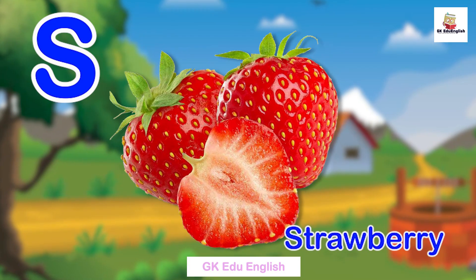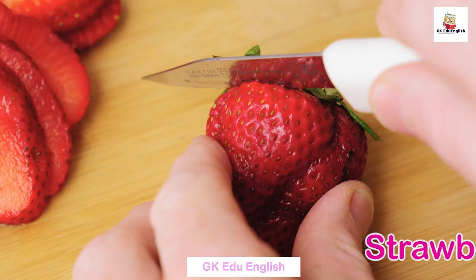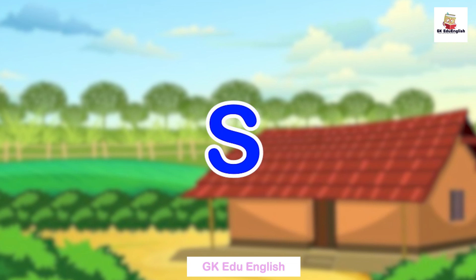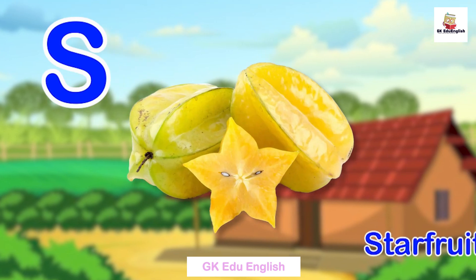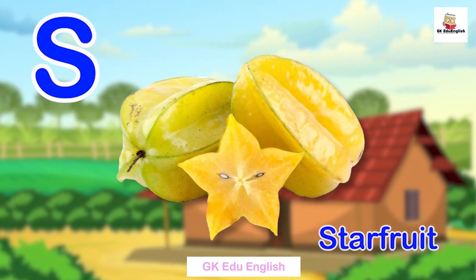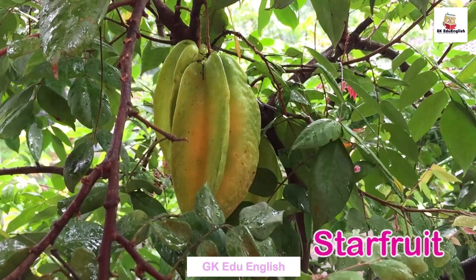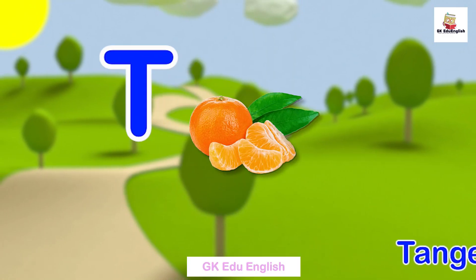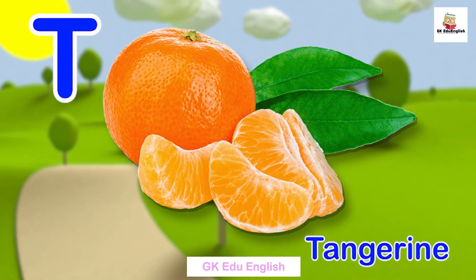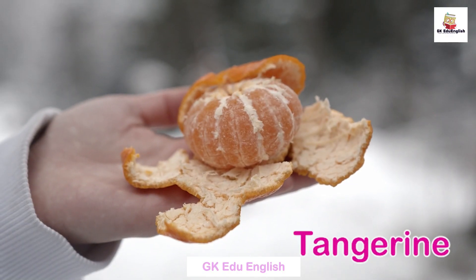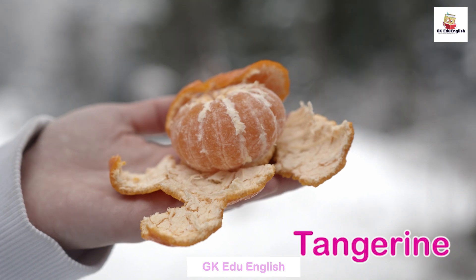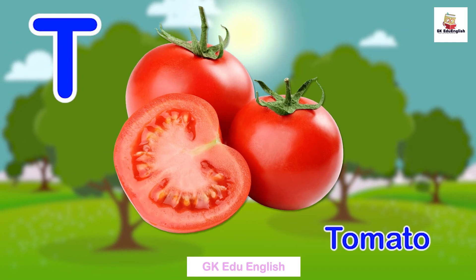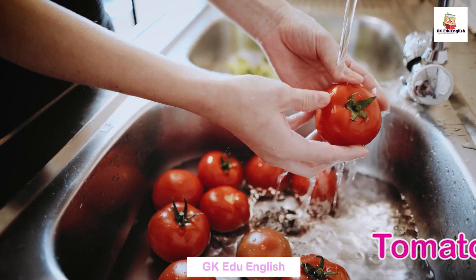R for raspberry. R for rambutan. S for strawberry. S for starfruit. T for tomato.